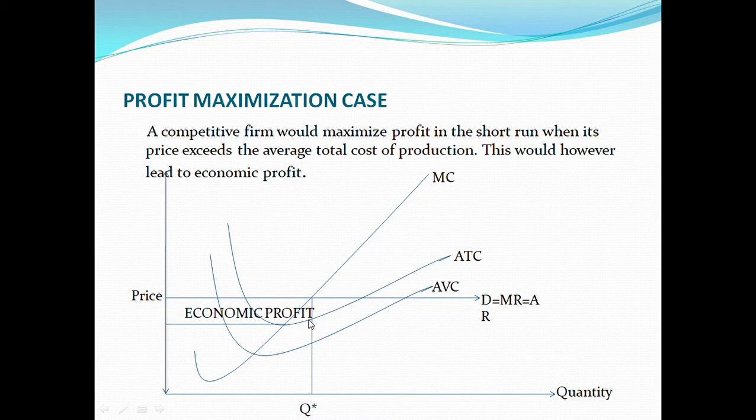But when we construct our average total cost, we have our average total cost to be at this point here. The deviation from this point to this point represents the economic profit that is accrued to this competitive firm.